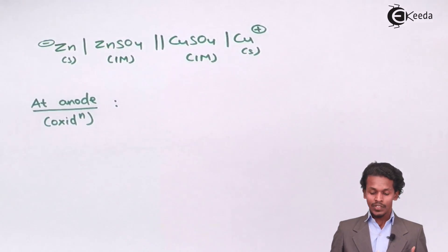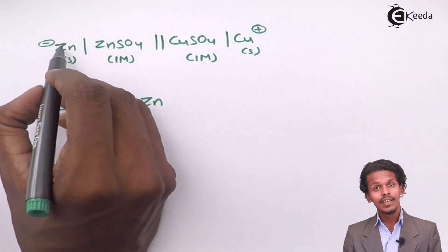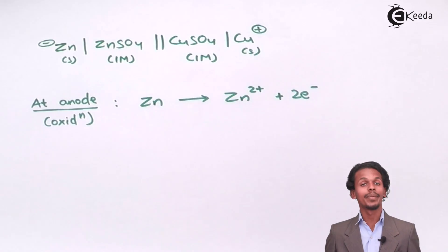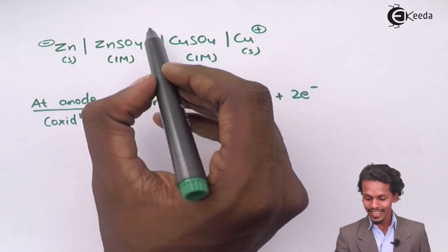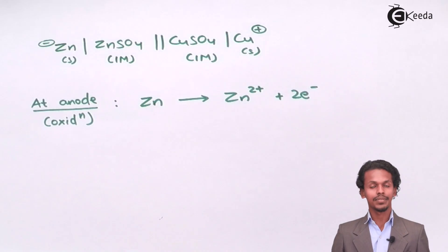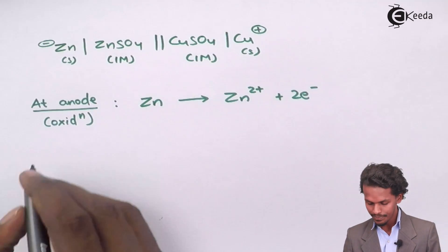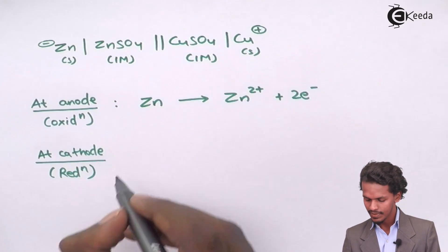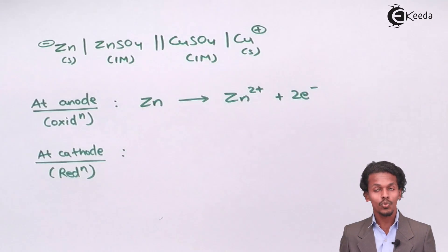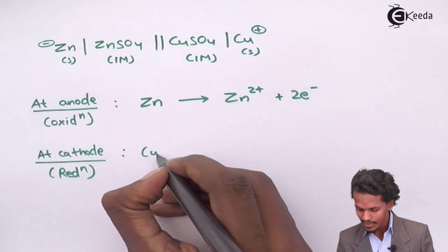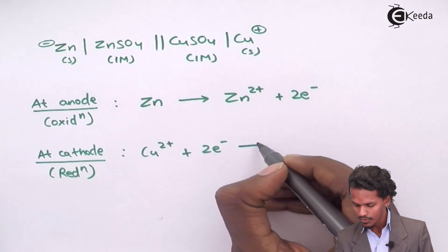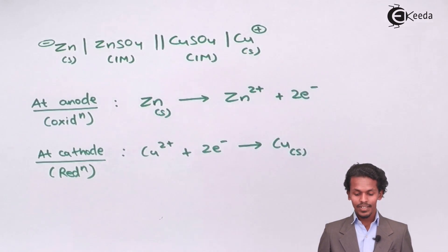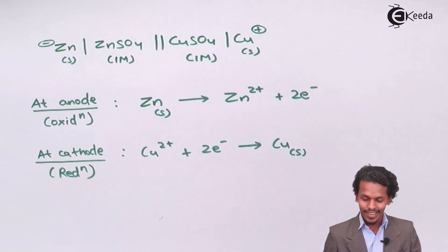At the anode, Zn is oxidized: Zn → Zn²⁺ + 2e⁻. This is the reaction that occurs at the anode. At the cathode, reduction takes place: Cu²⁺ from CuSO₄ gains two electrons to form solid copper — Cu²⁺ + 2e⁻ → Cu. This is how we predict the cell reaction by looking at the cell formula.